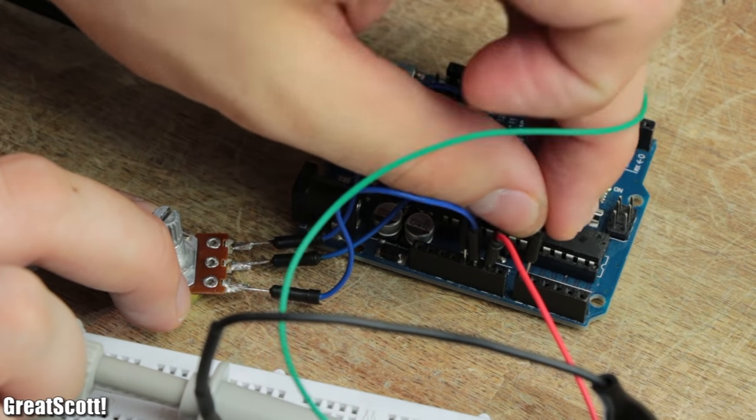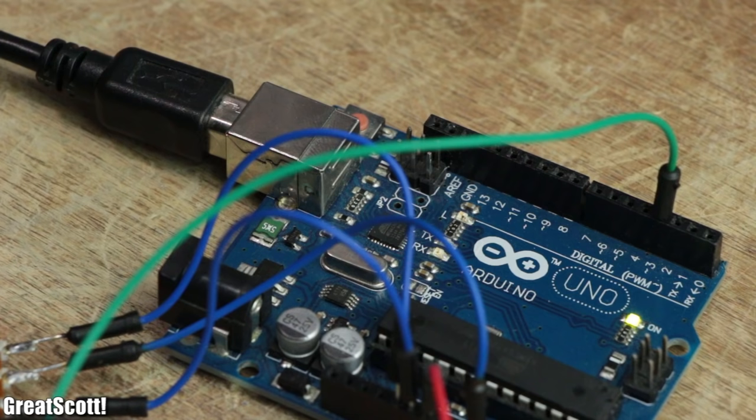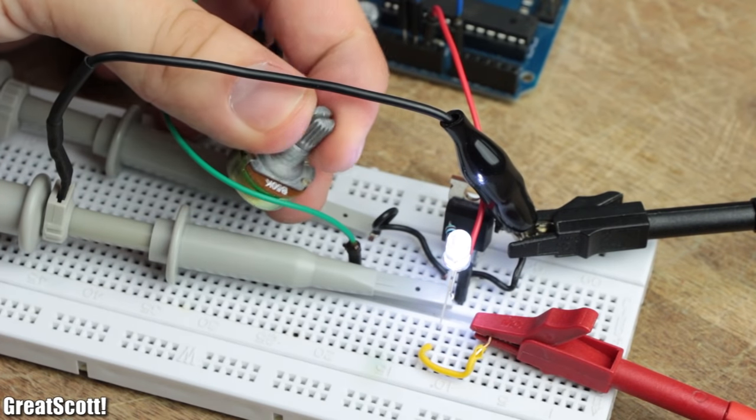And by adding a potentiometer as an analog input and tweaking the code a bit, we just created an LED dimmer.